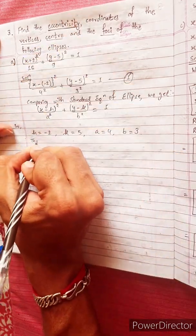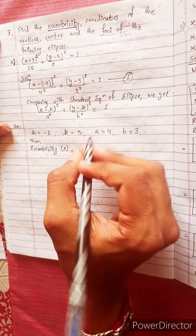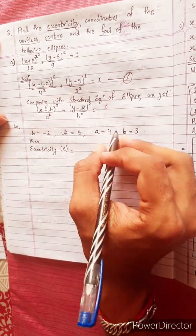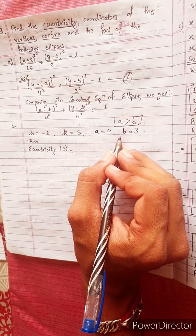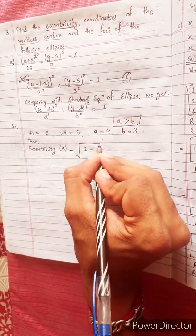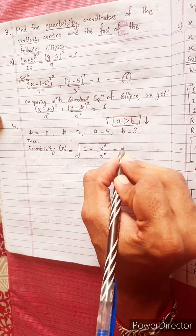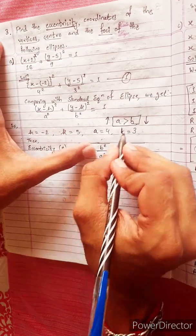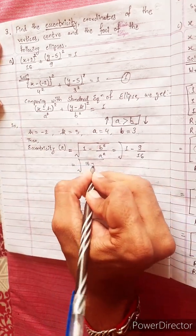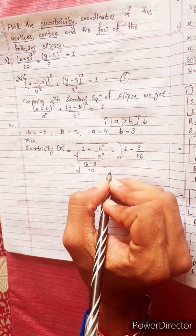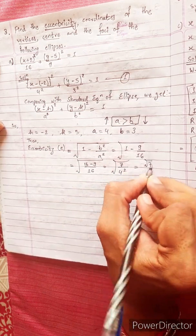Find the eccentricity. Eccentricity e — using the formula, since a is greater than b, we use the appropriate formula. We get: under root of (16 minus 9) divided by 16, equals under root 7 divided by 16, equals under root 7 divided by 4.